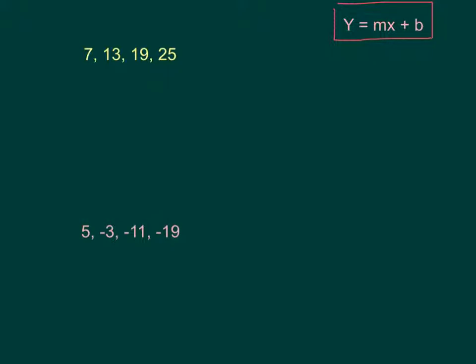Looking at my numbers, I can see that the difference between 7 and 13 is adding 6. 13 and 19 is adding 6. 19 and 25 is adding 6. So in this case, I know that m is going to be 6.